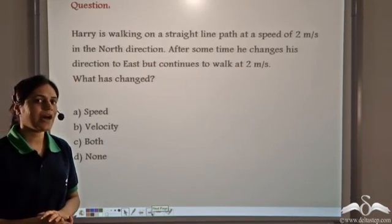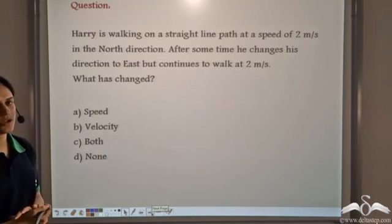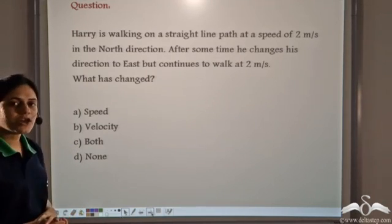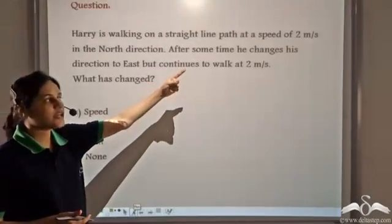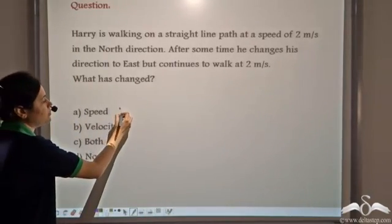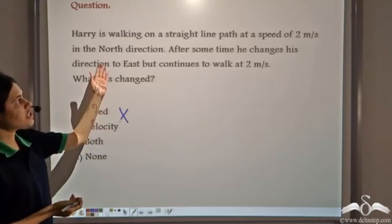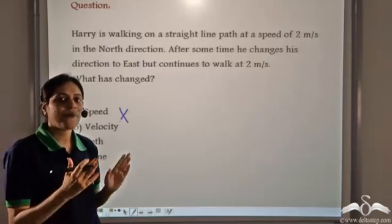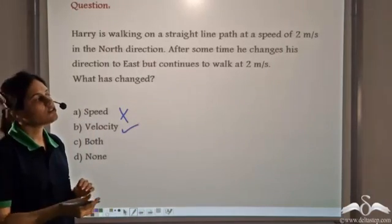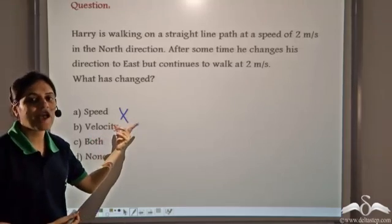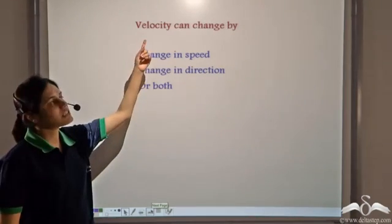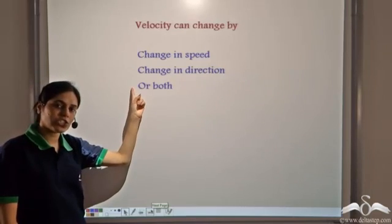Harry is walking on a straight line path at a speed of 2 meters per second in the north direction. After some time, he changes his direction to east but continues to walk at 2 meters per second. His speed remains constant at 2 m/s, however he changed his direction. Since velocity is magnitude plus direction, even if only the direction changes, we say that velocity has changed. Velocity can change by either a change in speed, a change in direction, or both.